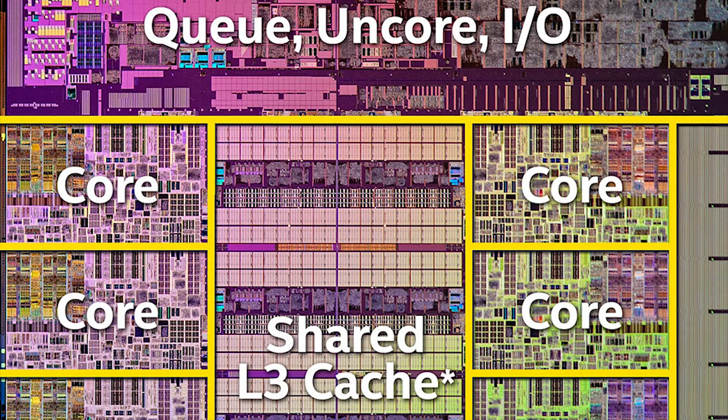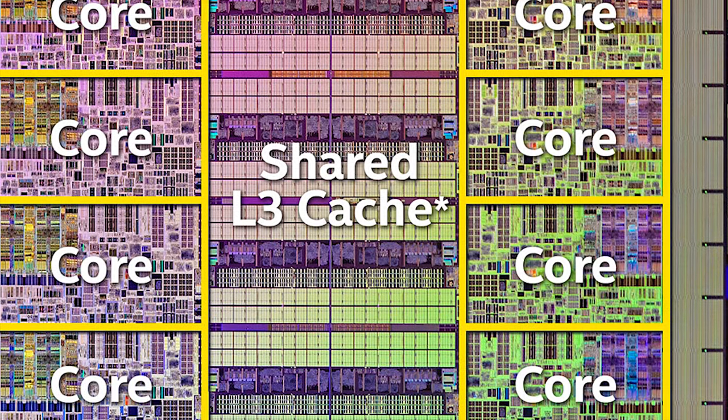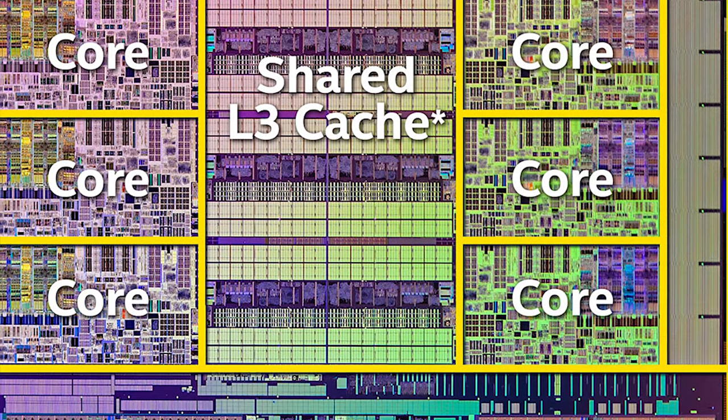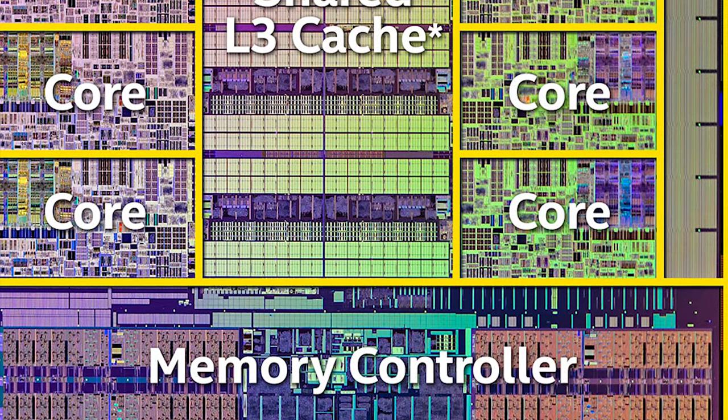As a result, a common octa-core processor may have an L1 cache for each core, an intermediate L2 cache for each pair of cores, and then just one L3 cache for the whole processor. Right now, L4 cache is pretty uncommon, but you can find it on some of Intel's CPUs with onboard eDRAM.